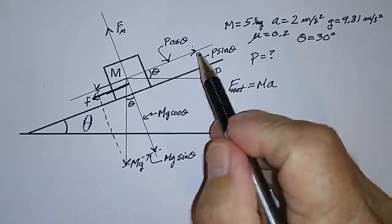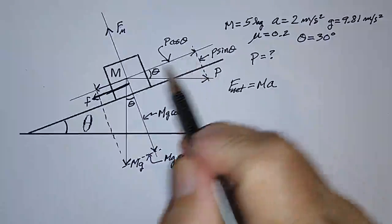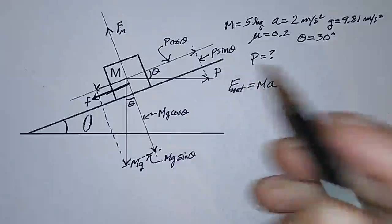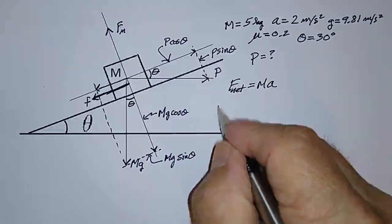Well, let's look at the forces that are causing it to accelerate up the plane. There's only one, and that is P cosine theta. So P cosine theta